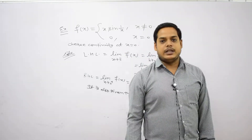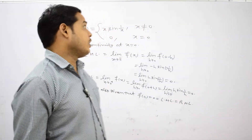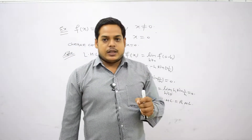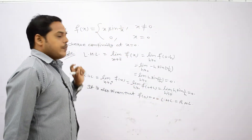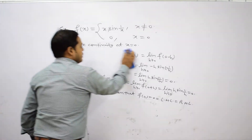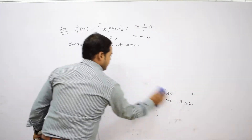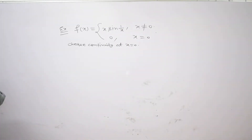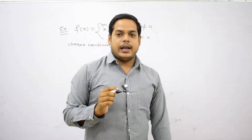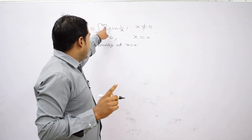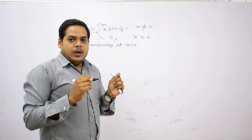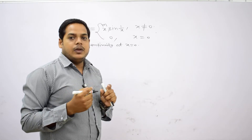It is given in the function that f(0) = 0. So f(0) = 0 equals LHL and equals RHL. Therefore, the given function is continuous at x = 0. From here we can discuss the continuity if we change the power of x. If we change the power to m, what will be the condition on m for the function to be continuous at x = 0?